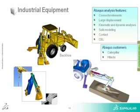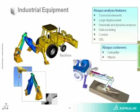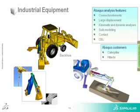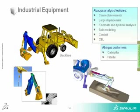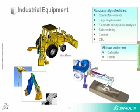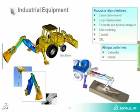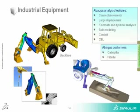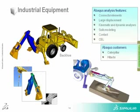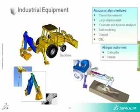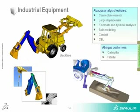Industrial equipment is the next topic. Here's an example of a backhoe, which has a number of complexities quite different from the areas discussed previously. There are a large number of connectors and joints in this model, again with large displacement and large deformation. Kinematics are considered along with dynamics — simple motion as well as dynamic interactions such as impact among various components.